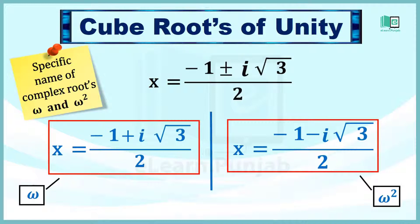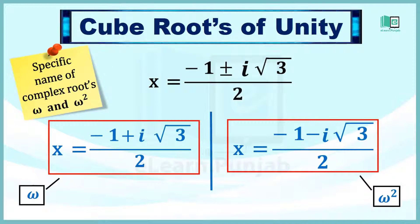यानि अगर दोनों roots में से एक omega होगा तो दूसरا omega square होगा। तो यह था हमारा आज का lesson।